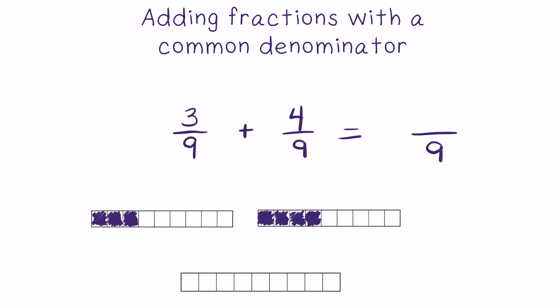The rule is: if you are adding fractions with common denominators, you simply add the two numerators together to solve the numerator for the sum. This can be shown visually by taking the 3 ninths from the first addend and placing them in the sum, represented in ninths, and then taking the 4 ninths from the second addend and moving them into the sum, also represented in ninths.